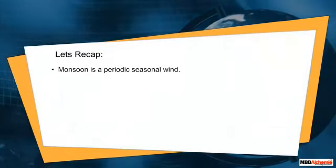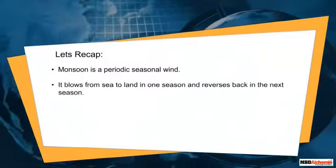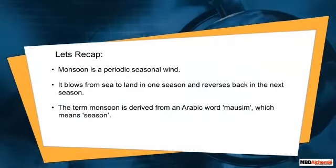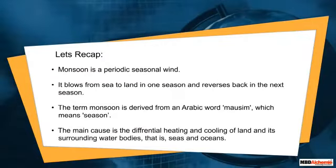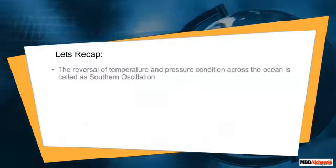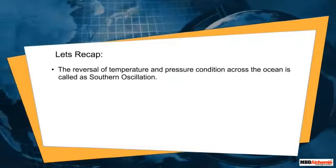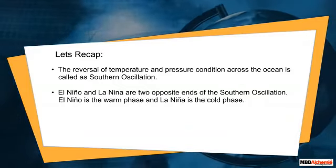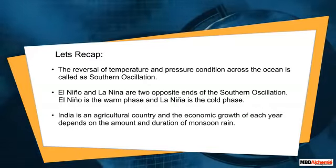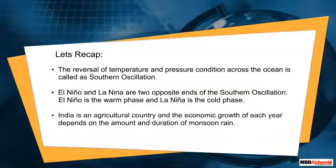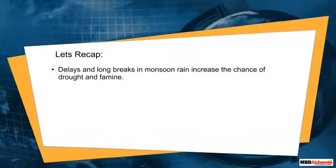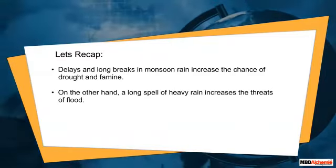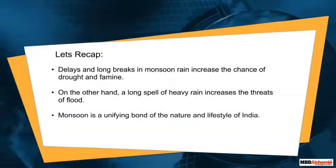Let's recap. Monsoon is a periodic seasonal wind that blows from sea to land in one season and reverses back in the next. The term monsoon is derived from the Arabic word 'mossim', meaning season. The main cause is the differential heating and cooling of land and its surrounding water bodies. The reversal of temperature and pressure conditions across the ocean is called the Southern Oscillation. El Niño is the warm phase and La Niña is the cold phase. India is an agricultural country and economic growth depends on the amount and duration of monsoon rain. Delays and breaks increase the chance of drought and famine, while heavy rain increases the threat of flood. Monsoon is a unifying bond of the nature and lifestyle of India.